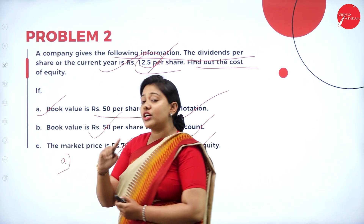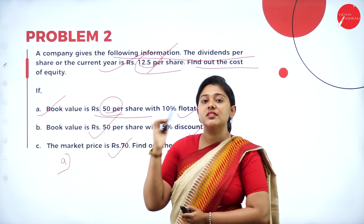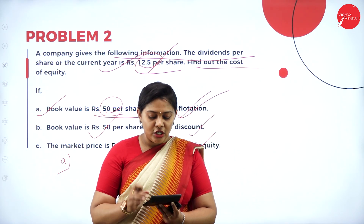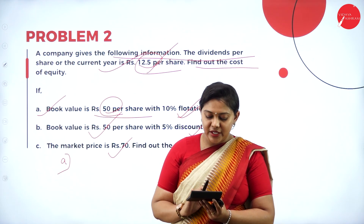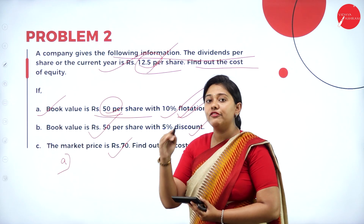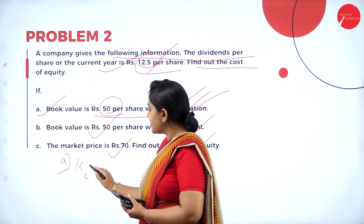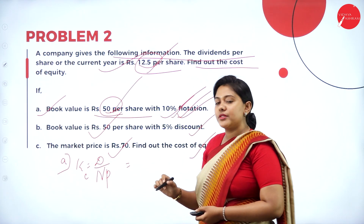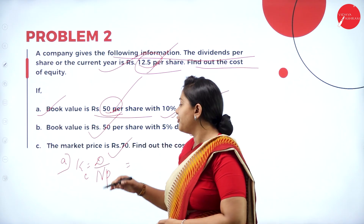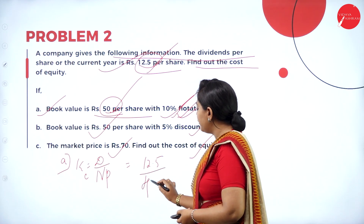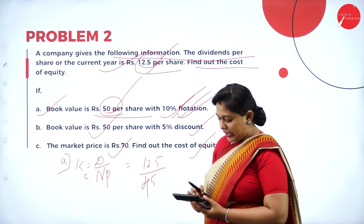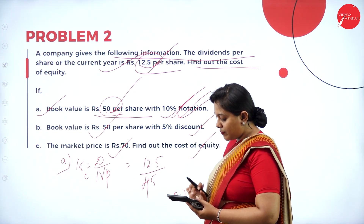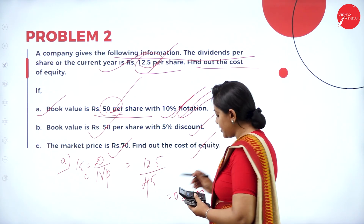Condition A: book value is rupees 50 per share with 10% flotation cost. Net proceeds = 50 − (50 × 10%) = 50 − 5 = rupees 45. Formula: Cost of Equity = Dividend ÷ Net Proceeds = 12.5 ÷ 45 = 0.277, which is 27.7%.